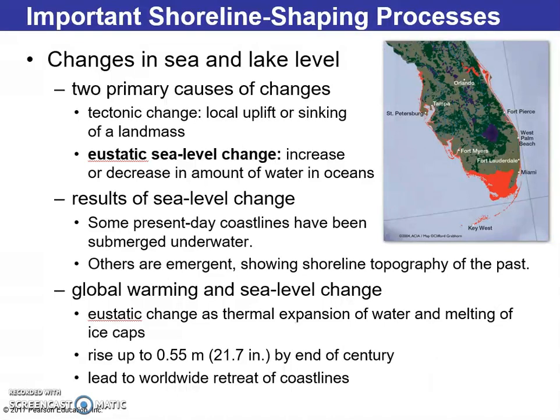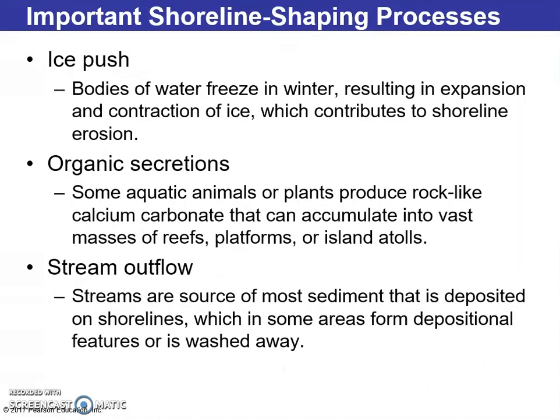We also talked about changes in sea level and lake level. Eustatic sea level change is an increase or decrease in the amount of water in the oceans — the amount of water and gravitational pull are both components there. Global warming drives eustatic change through thermal expansion of water and melting of ice caps, essentially a transfer of energy and matter.